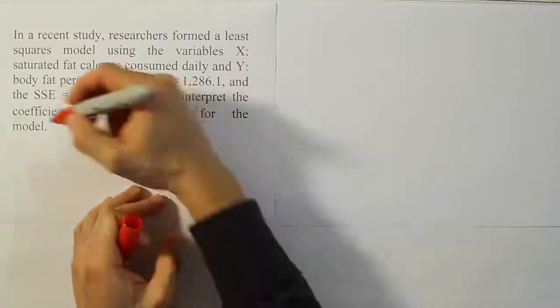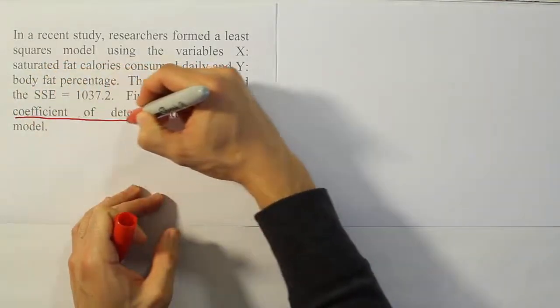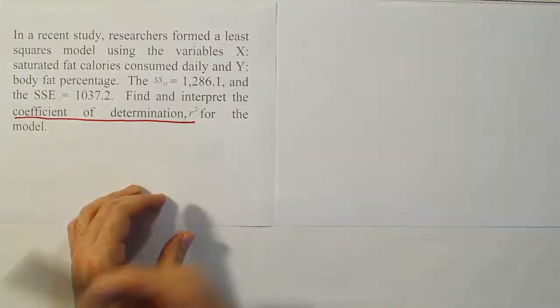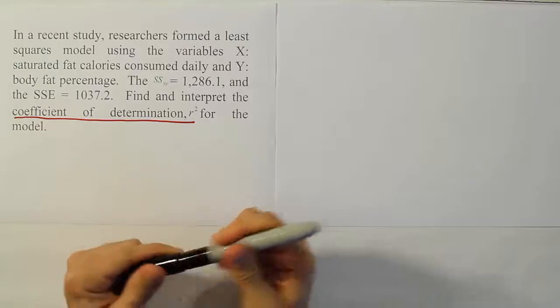Okay, so it's clear that we want to find the coefficient of determination, which they nicely indicate is R squared that we're looking for, in case you're not familiar with the name, although you should be at this point.